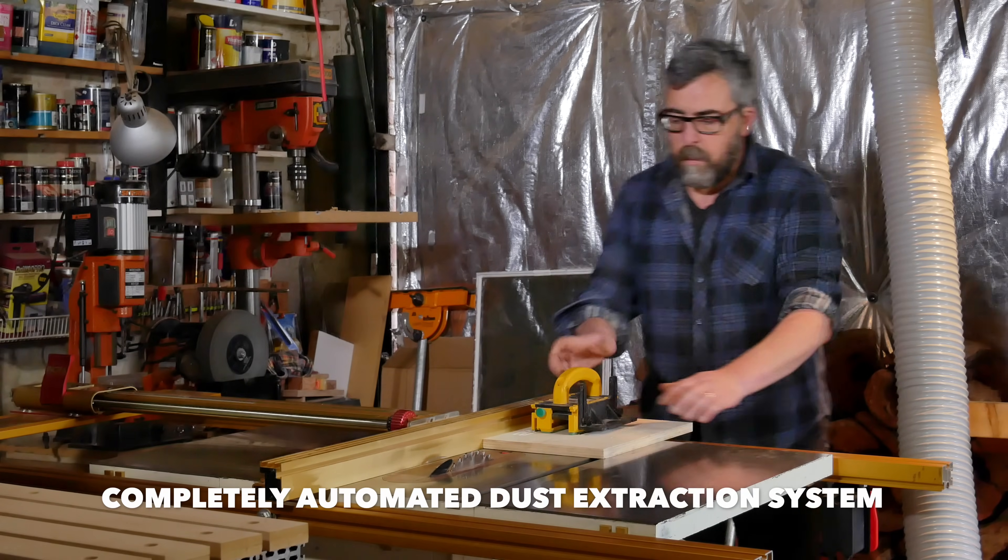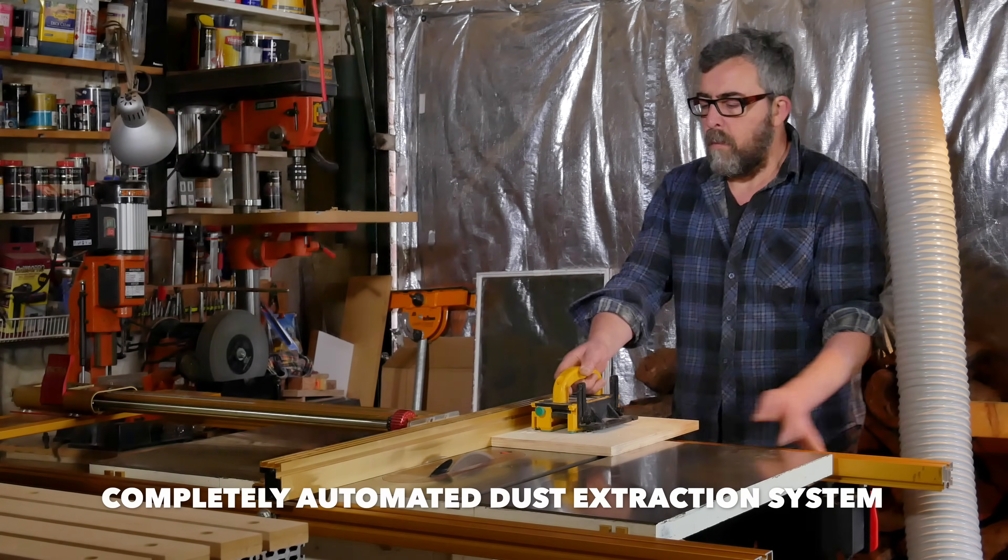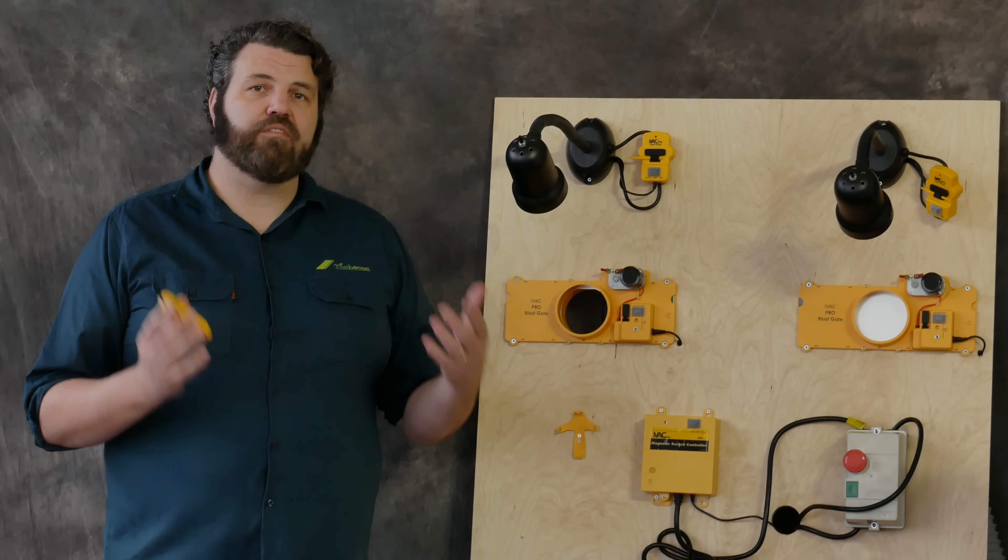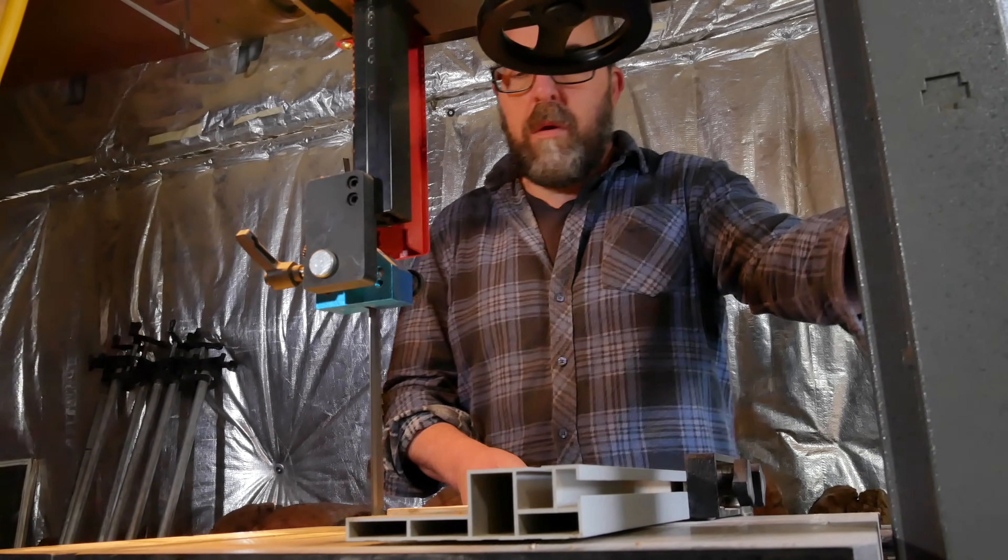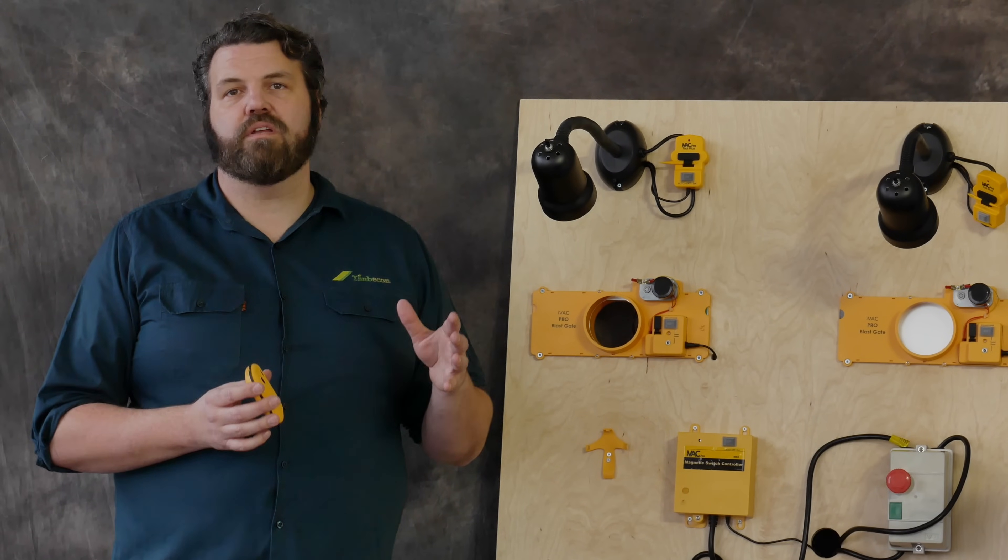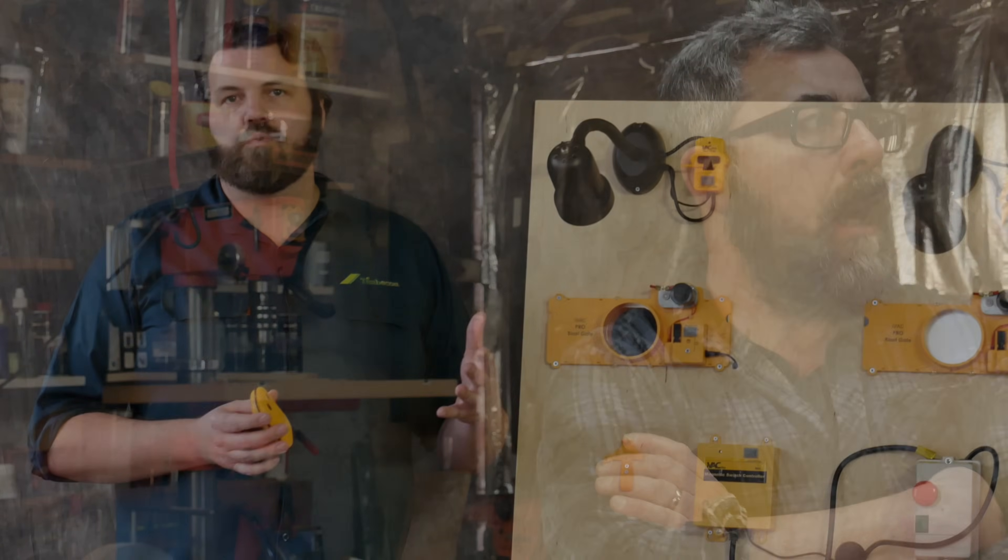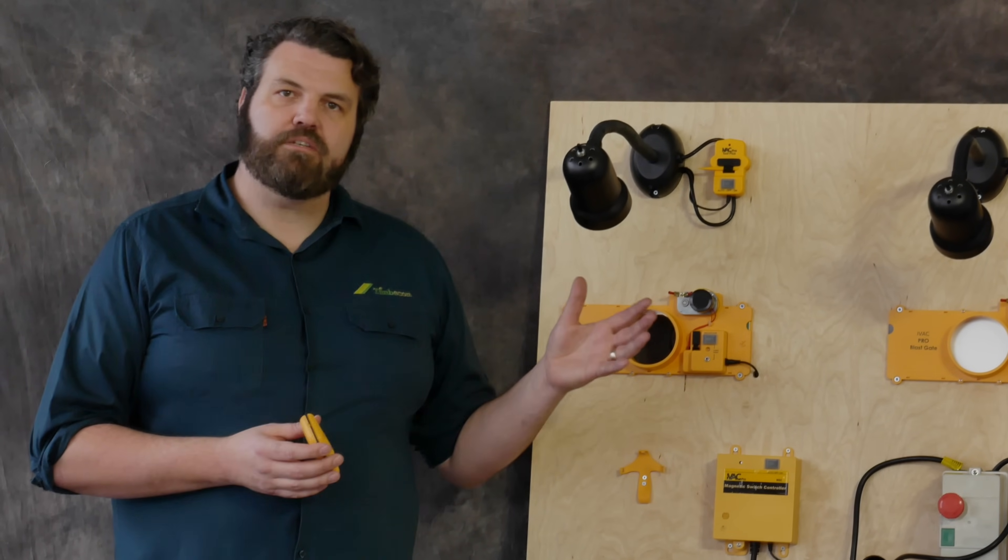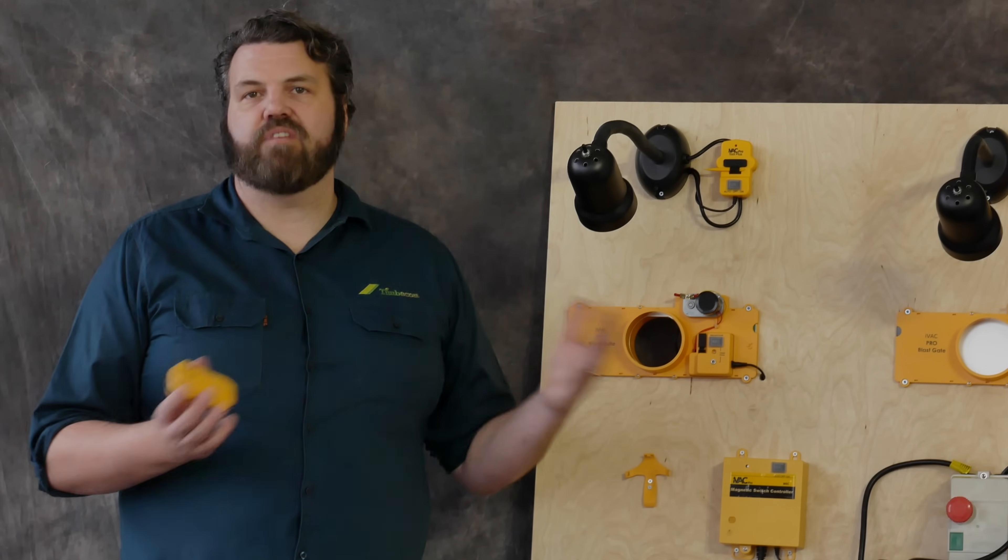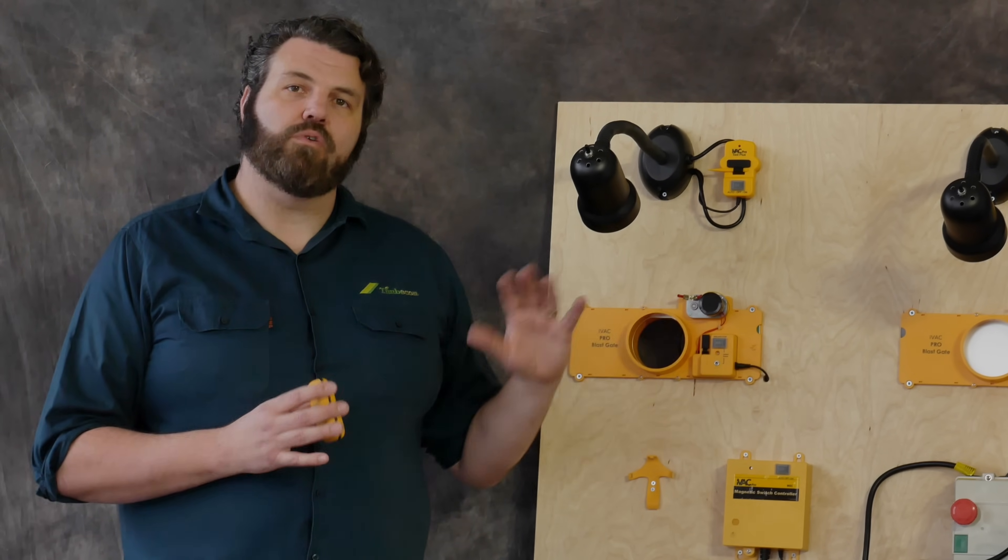When you install the IVAC system into your workshop, you'll have a completely automated system that follows you around to all the different workstations you're working on at the time. Even if you have two or three people working in the workshop at one time, it's smart enough to open and close the blast gates as you need them, when you need them, without you having to think about it ever again. Dust control will become something you don't even have to think about. With the IVAC system, you can set the system and forget about it, and the IVAC will do all the work for you.